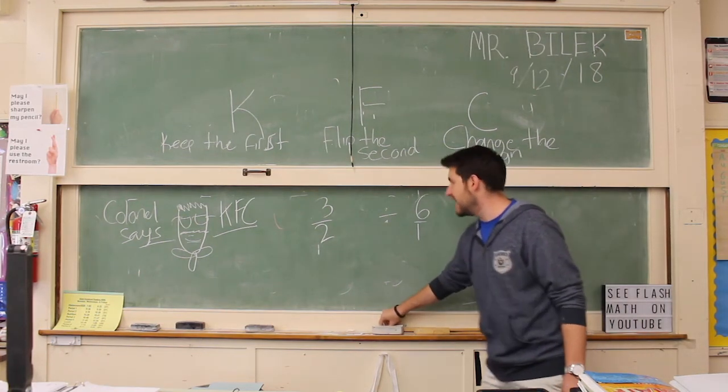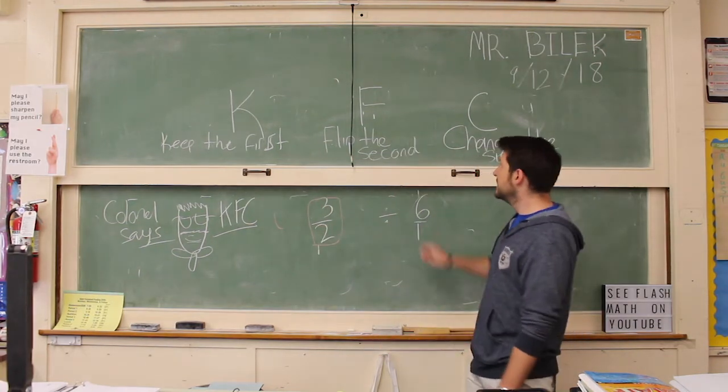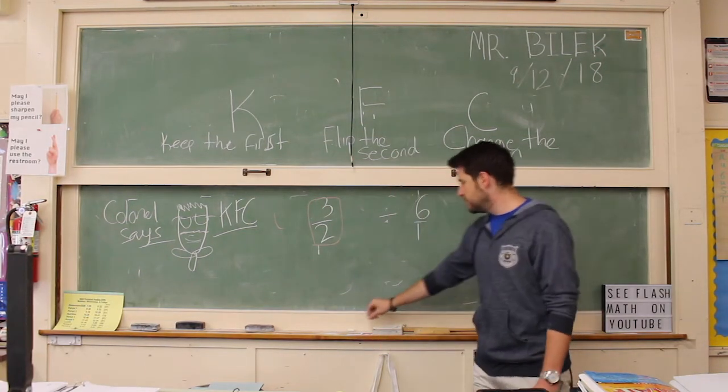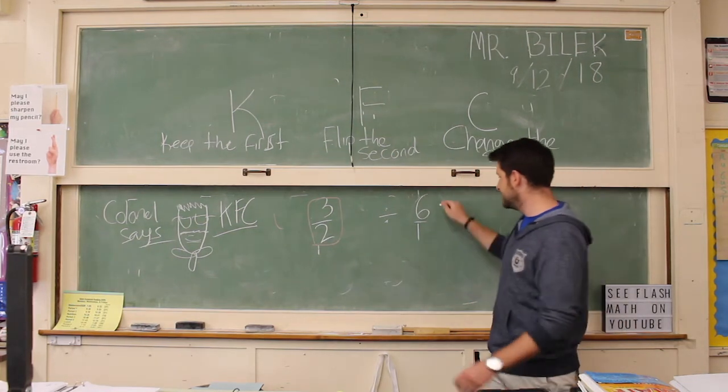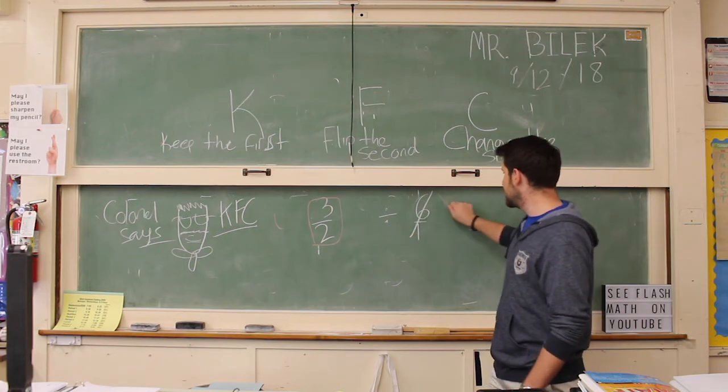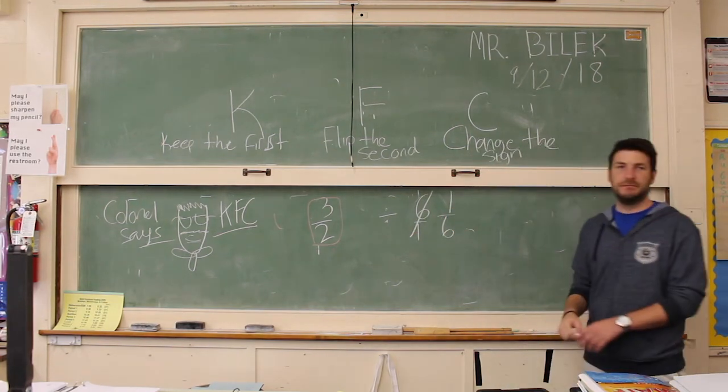Let's get started. First we have the K. K stands for keep the first, so we want to keep this guy exactly how it is. Second one is our F, the second part of our secret herbs and spices, which is flip the second. We have the six over one, we're going to change that to one sixth. Now we have three halves divided by one sixth.